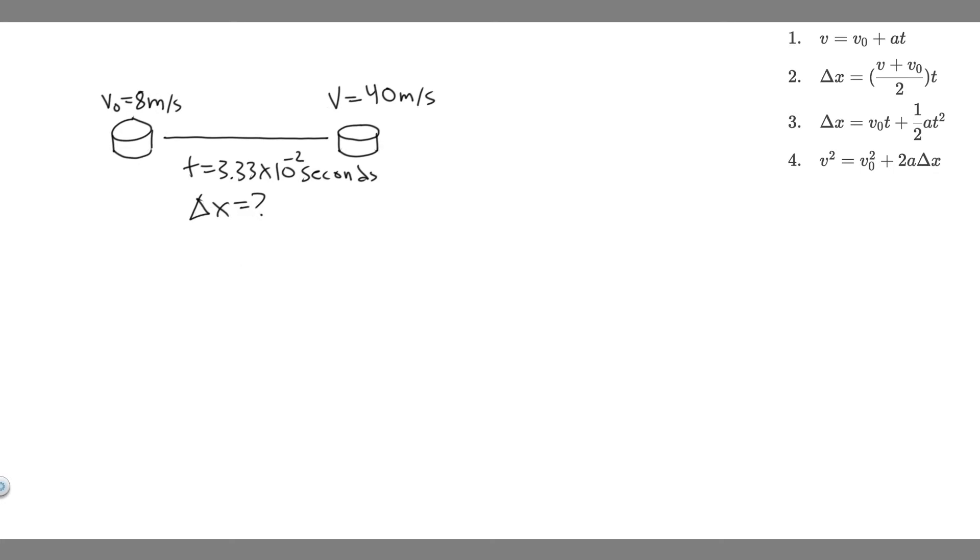What we want to do next is write down the given. When you do the given, you just want to write the kinematic variables that you're given. So we know the initial velocity is 8 meters per second. We know the final velocity at the end of the interval is 40 meters per second. We know the time this is going to take, which is 3.33 times 10 to the minus 2 seconds. And we're solving for delta x, which is the change in position or how far something travels.